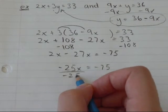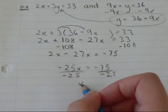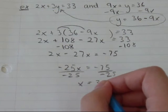Divide both by negative 25. You'll get x equals 3.